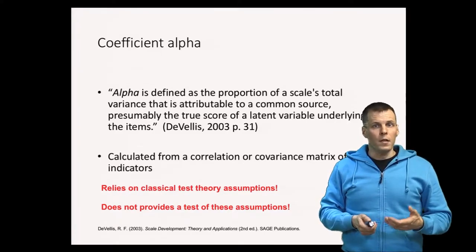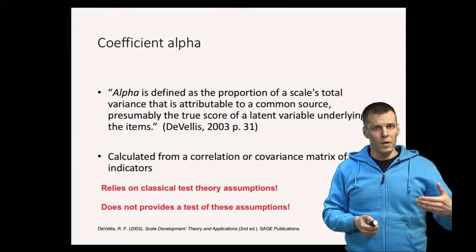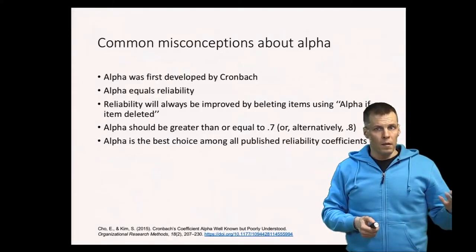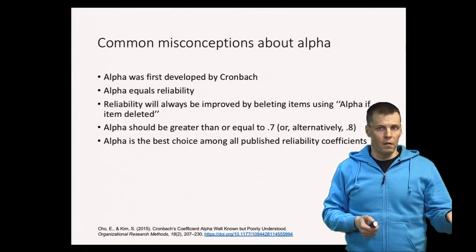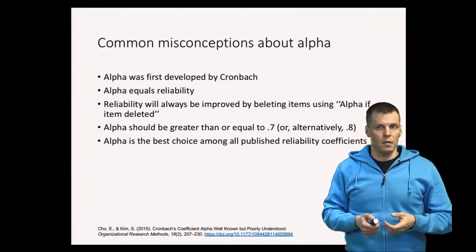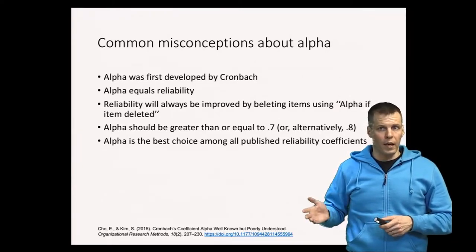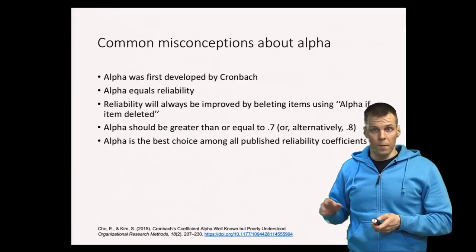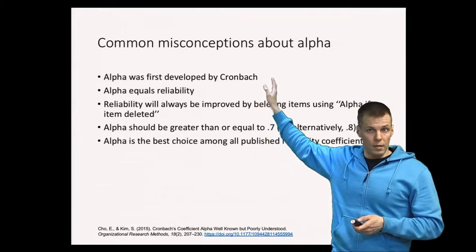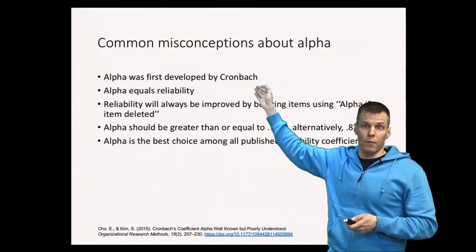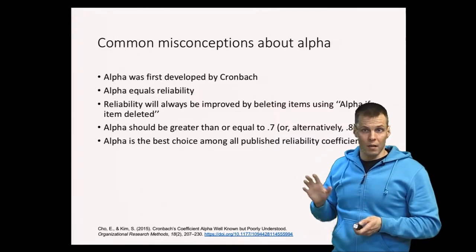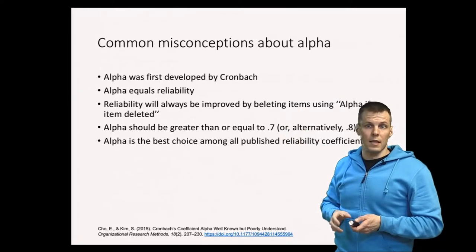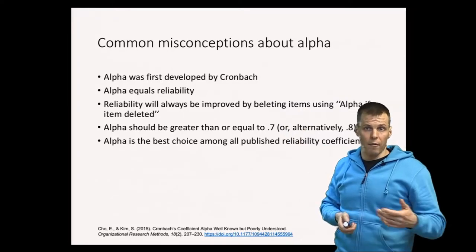While alpha is commonly used, there are also common misconceptions that you see in research. The first misconception is that it was developed by Cronbach. That's not the case. It was developed a couple of decades before Cronbach's widely-cited paper. It just happens to be the first index in his paper where he discussed many different reliability indices and therefore it got the coefficient alpha and it got his name. But Cronbach himself says that this index probably shouldn't carry his name.